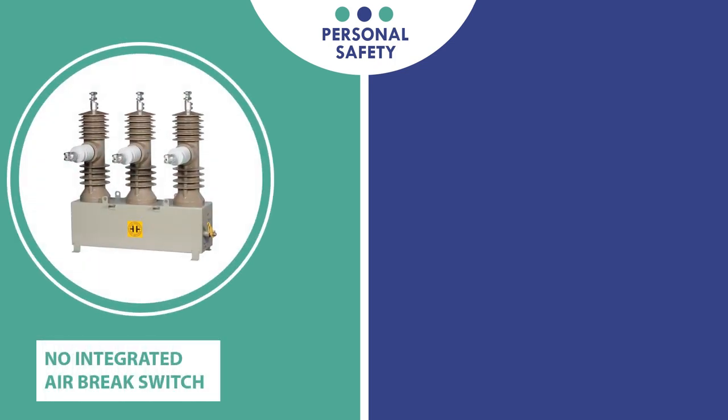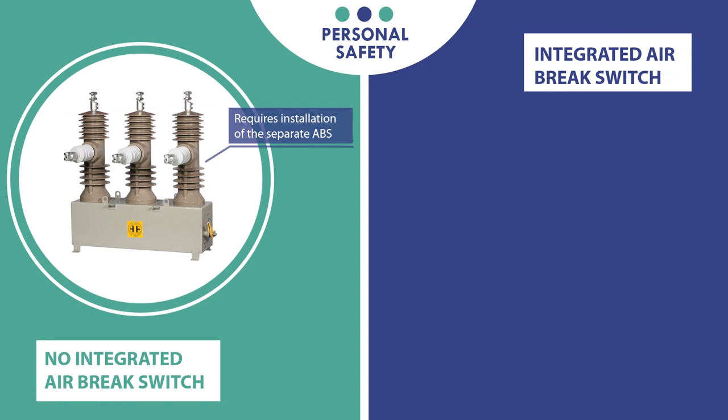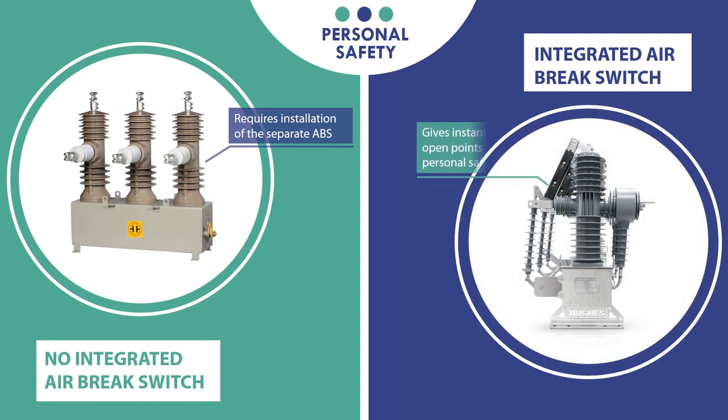Moving forward to the next important factor: personal safety. All other manufacturers do not provide built-in air brake switch, which means that it needs to be installed separately on another pole. Hughes provides optional integrated air brake switch, which gives 3 visible open points for enhanced personal safety of linemen. This option has lower cost compared to a separate device.